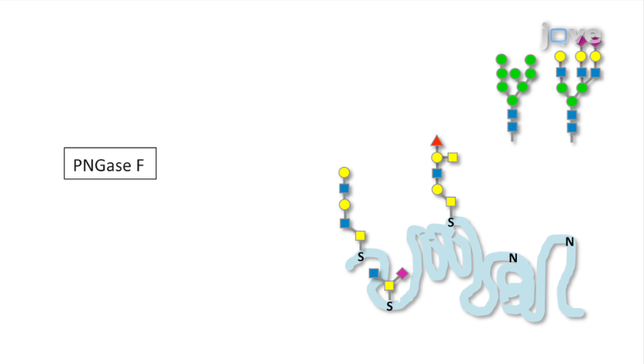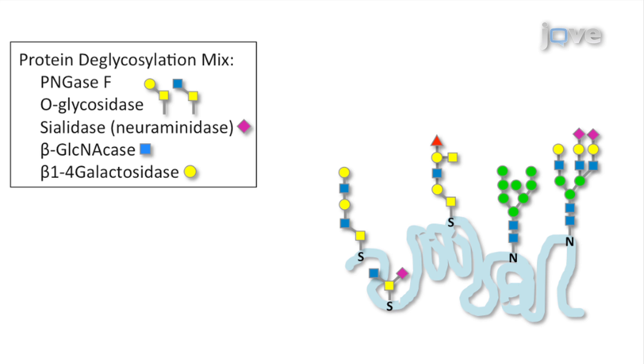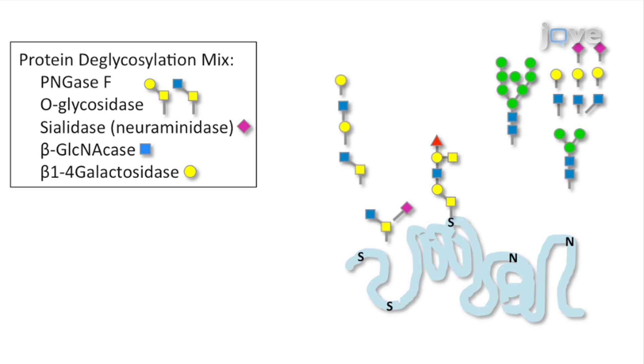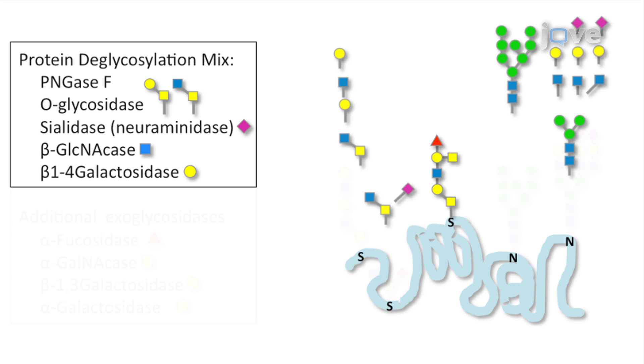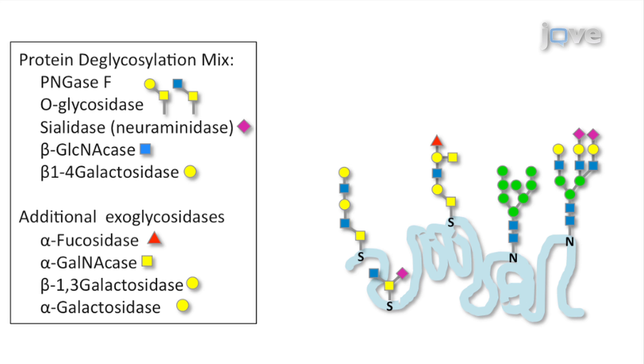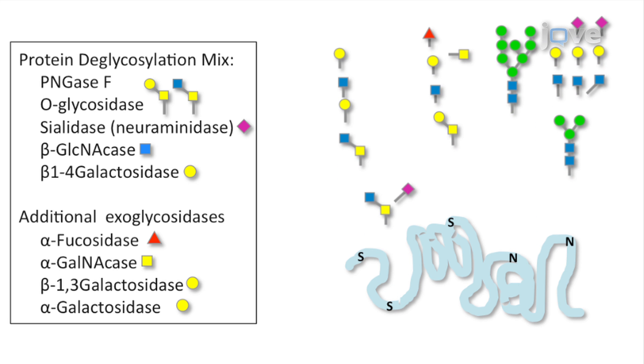This is achieved by treating a glycoprotein with PNGase F or with the protein deglycosylation mix. The protein deglycosylation mix was supplemented with a mixture of additional exoglycosidases which sometimes help remove otherwise resistant sugars.